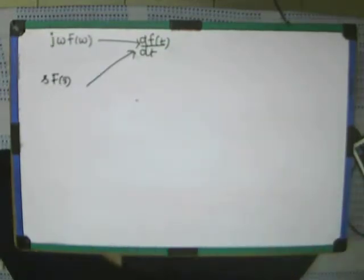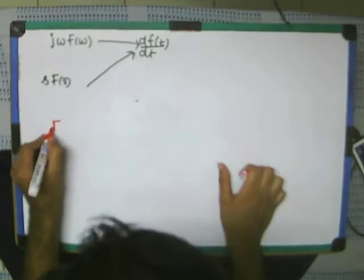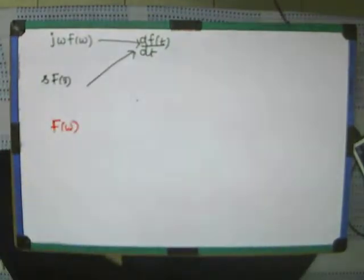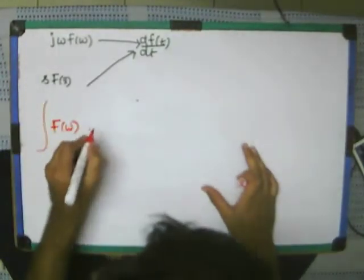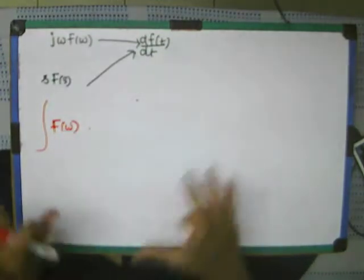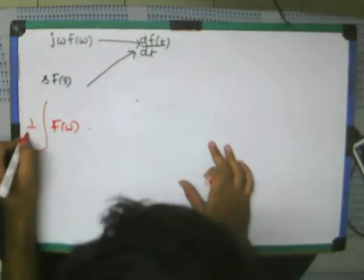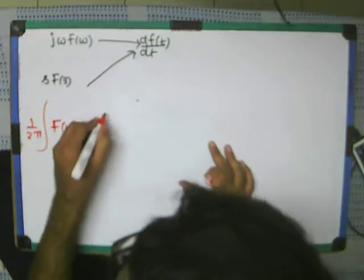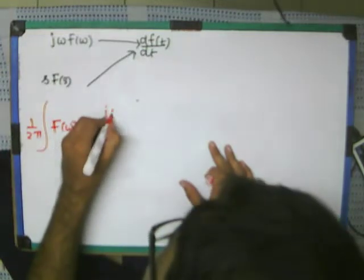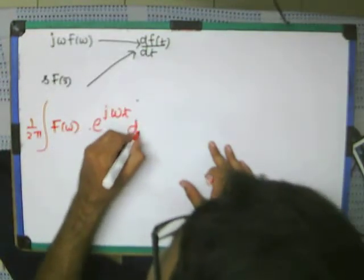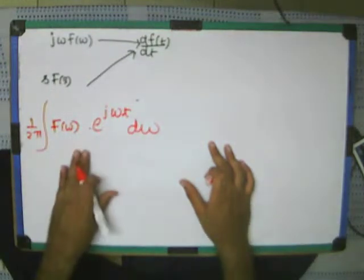Instead of this, why can't we just simply take the formula F(ω) in mind? Remember what is the formula of inverse Fourier transform and Fourier transform. At least this much remember: f(t) = 1/(2π) ∫F(ω)e^(jωt) dω.